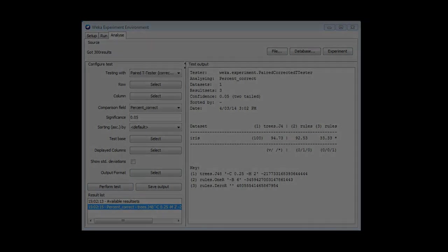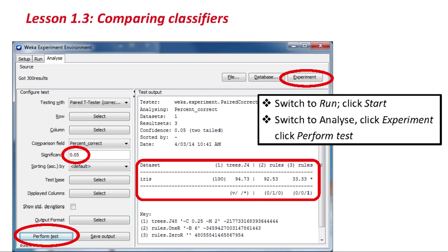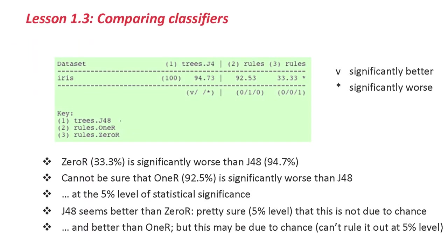Back to the slides here — that's what I did. I switched to the Analyze panel, clicked these things, and got these results, which look like this. Now we can see the three figures for the three classification algorithms on the IRIS dataset. We can see that both 1R and 0R are worse than J48, just looking at the numbers.